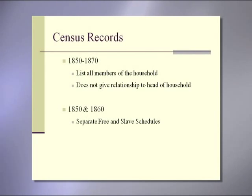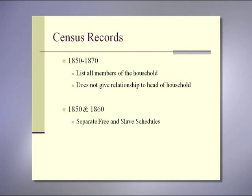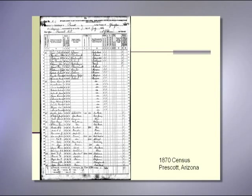Beginning in 1850 they list everyone in the household, but they don't give you their relationship. It lists the men, women, children, and servants, and sometimes you can tell a little bit of the relationship by the occupation — for example, it might list that somebody was a servant. In 1850 and 1860 there are separate free and slave schedules. This is the 1870 census for Prescott, Arizona, and you get the name of the person, their age, sex, race, occupation, and where they were born.